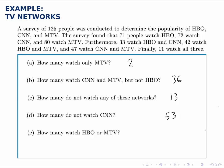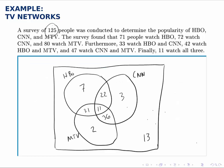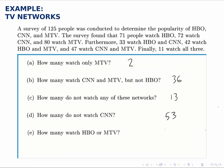And then finally, how many watch MTV or HBO? MTV or HBO is the union of those two circles, which we notice contains everything except for these three out here and the 13. So it contains everything but 16 people, which means there are 109 people inside that union because there's a total of 125 in the whole thing.